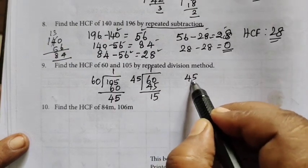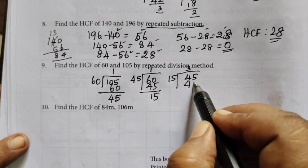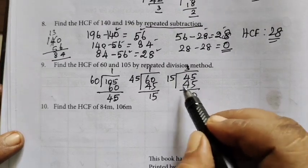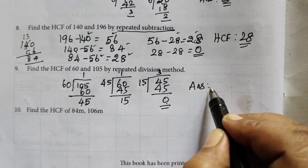Again larger number inside, smaller number outside, 3 times 45, remaining 0. So when it is 0, then the quotient, so we choose the answer HCF, 15 is the answer.